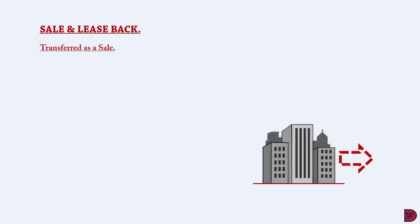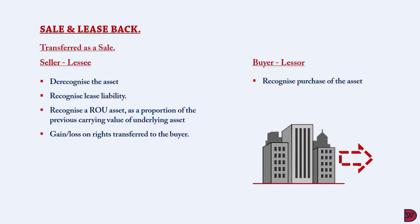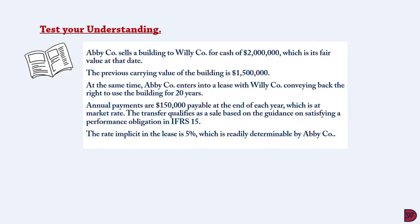When a transfer is deemed as a sale, the initial seller, who now becomes the lessee, has to de-recognize the asset from its books, recognize a lease liability which is the present value of lease rentals, recognize a right-of-use asset as a proportion of the previous carrying value of the underlying asset, and recognize a gain or loss on rights transferred to the buyer. The buyer-lessor on the other hand will recognize the purchase of the asset and apply lessor accounting.